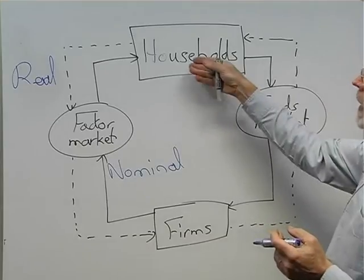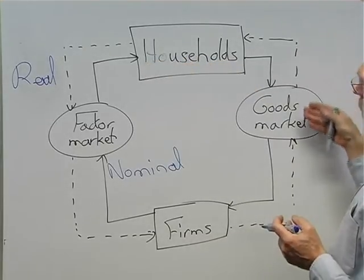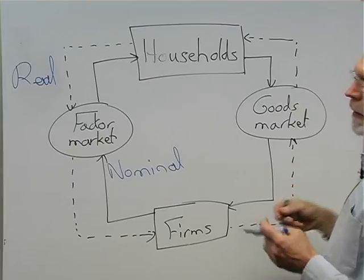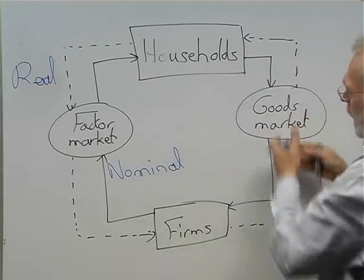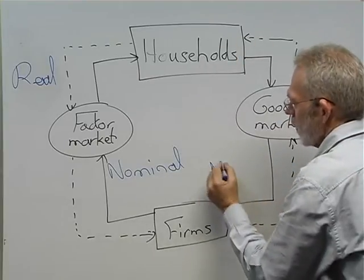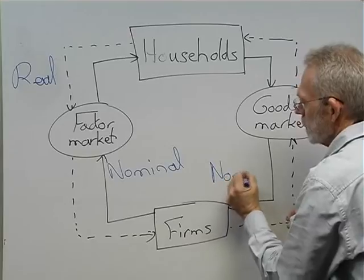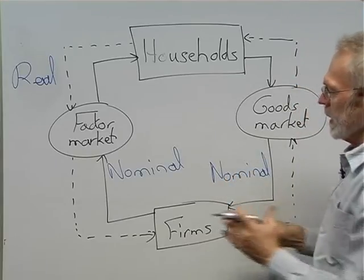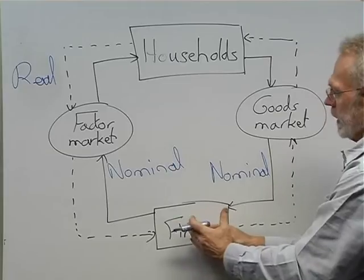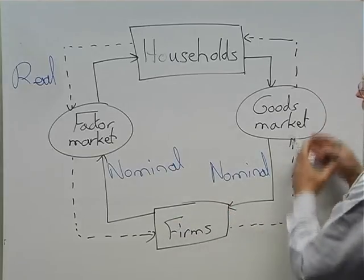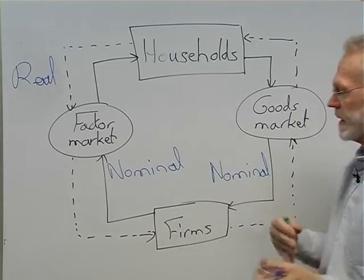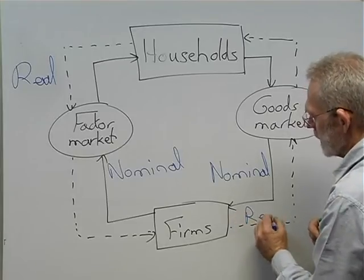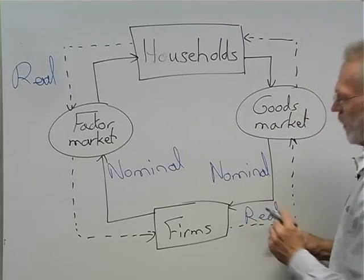Households spend their income on goods and services, and this spending flow is also nominal — there's a flow of money. In return, they receive goods and services — something you can touch — so we call this also a real flow.